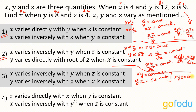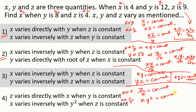Part four: Z varies directly with X, so Z/X = constant; X varies inversely with Y², so X×Y² = constant. Combining, Z/(X×Y²) = constant, giving the relation Z1/(X1×Y1²) = Z2/(X2×Y2²). This covers all four parts of the joint variation problem, where one variable depends on two or more variables taken one at a time while keeping others constant.